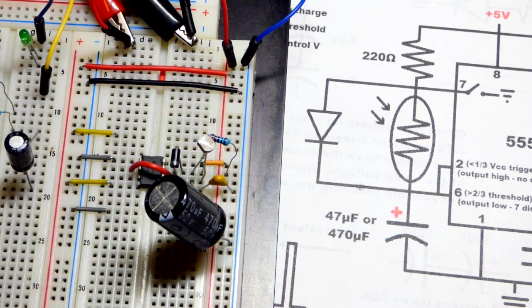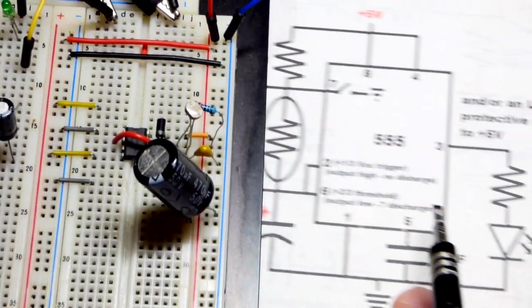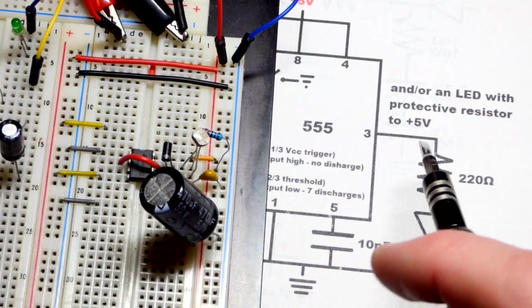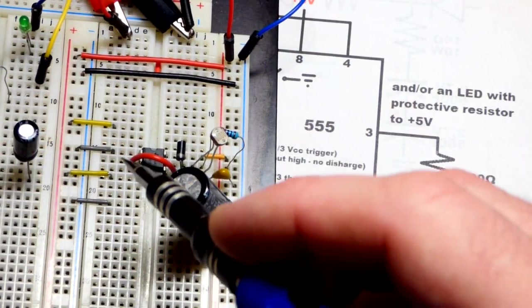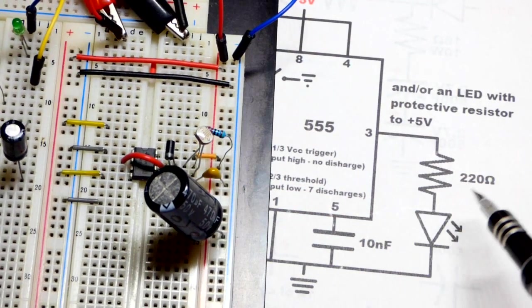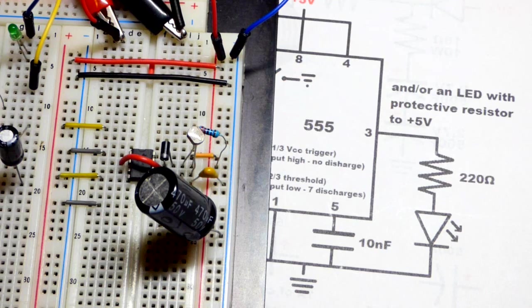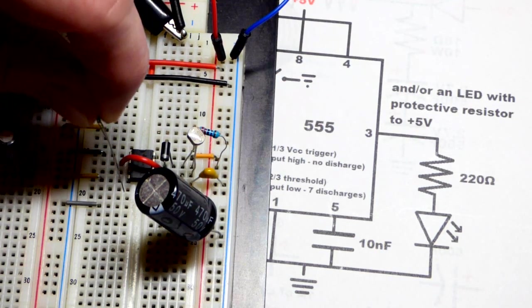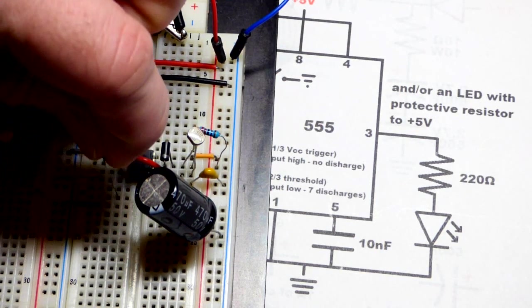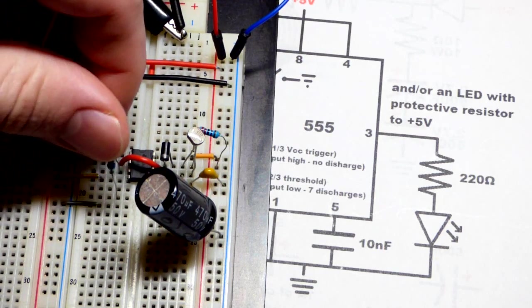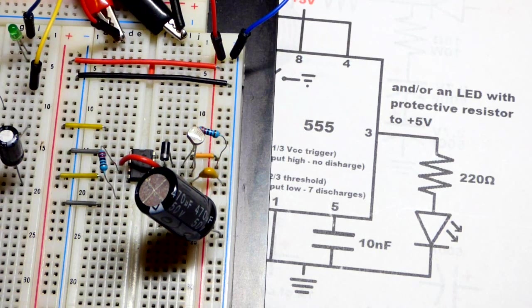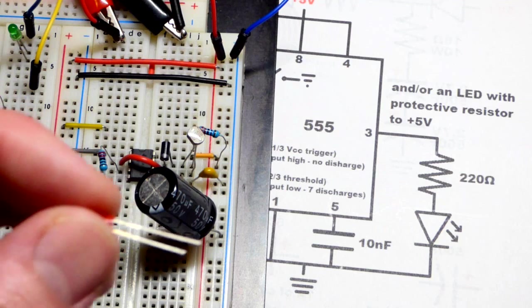We could take a multimeter and see the voltage change, if we wanted to. But it is better, in my opinion, to have a flashing LED. So what we're going to do, pin three right there, that is the output pin. Again, we're going to take a 220 ohm resistor, because we're dealing with five volts, and we could use a higher value resistor. The LED just won't be as bright.